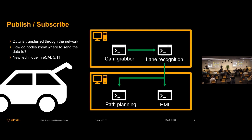Today it's not actually about the data transport. Today is about the question: how do we draw these green lines? How does eKAL know that the data must flow from the camera grabber to the lane recognition? And how does eKAL know where the lane recognition is? So how does this discovery work? We call that in eKAL the registration — or sometimes the monitoring — layer.